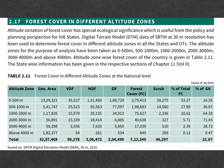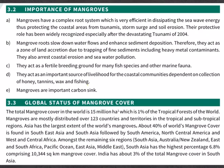Have a look at the forest cover in different altitude zones. In terms of percentage of total forest cover, maximum forest cover is between 0 to 500 meters of altitude. But in terms of the percentage of total geographical area, the maximum forest cover is between 2,000 to 3,000 meters of altitude.